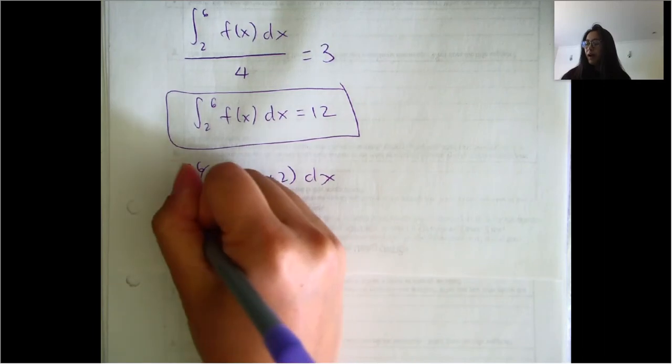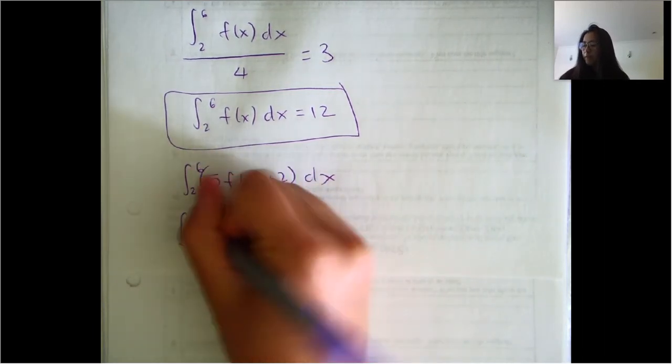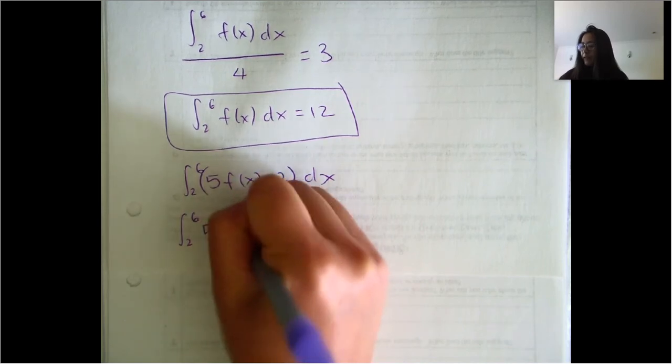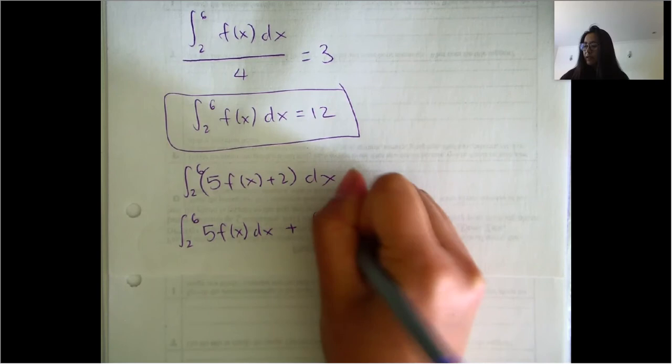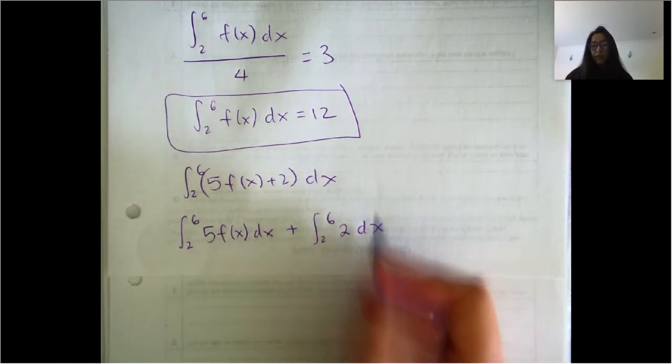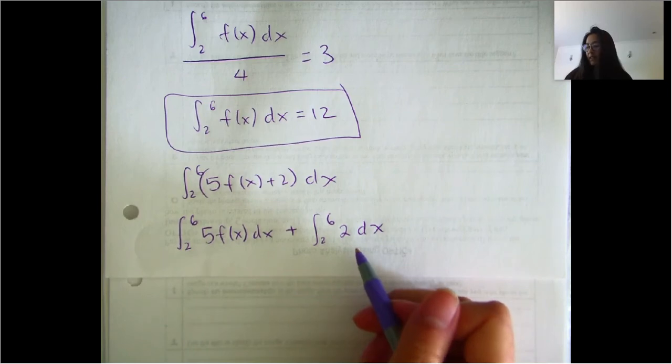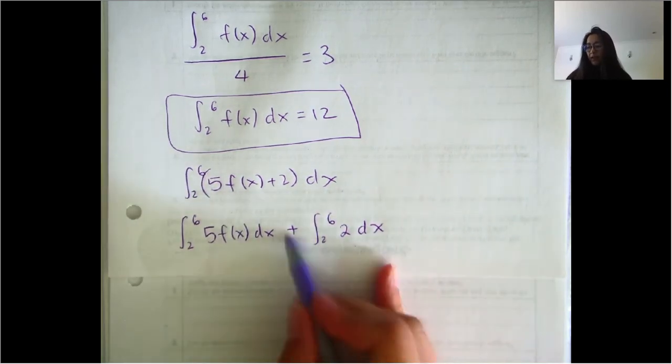So we do the integral from two to six of five times F of X DX plus the integral from two to six of two DX. And so if you're looking at that, what that means is we can split the integral across addition.